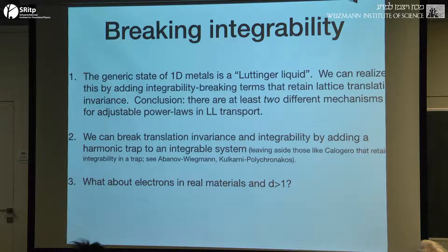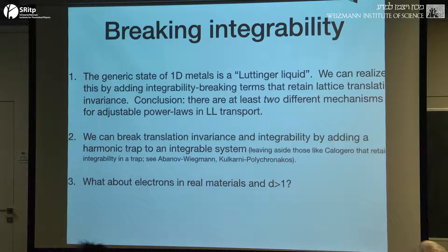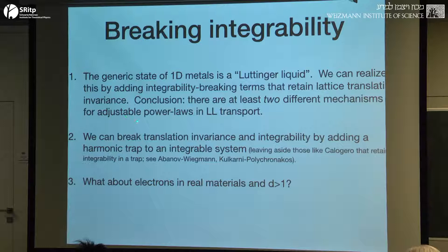If you take one-dimensional metals and you turn on repulsive interactions, you get a so-called Luttinger liquid. At low energy, that's kind of a free boson theory. It's very remarkable that interacting Fermions are related to free bosons. It turns out that these integrability ideas and perturbations to the Luttinger liquid tell you how you actually measure finite conductivities when the Luttinger liquid itself would have ballistic conductivity. So this is basically, we think, the generic state of one-dimensional solids, and there are cases where you might have spin chains in a 3D material that are pretty Luttinger liquid-like as well.